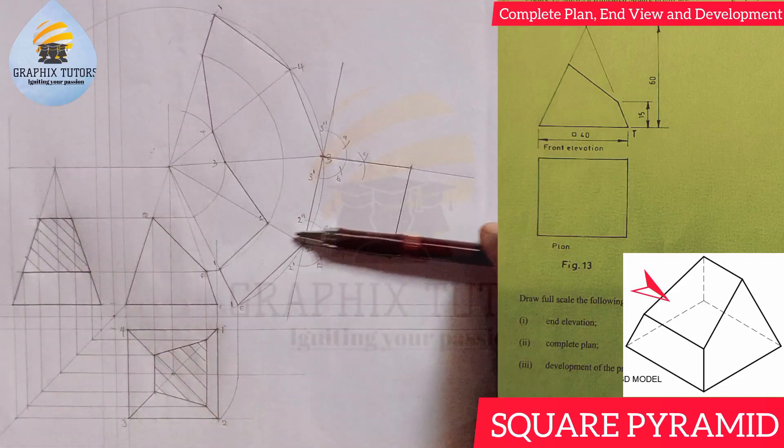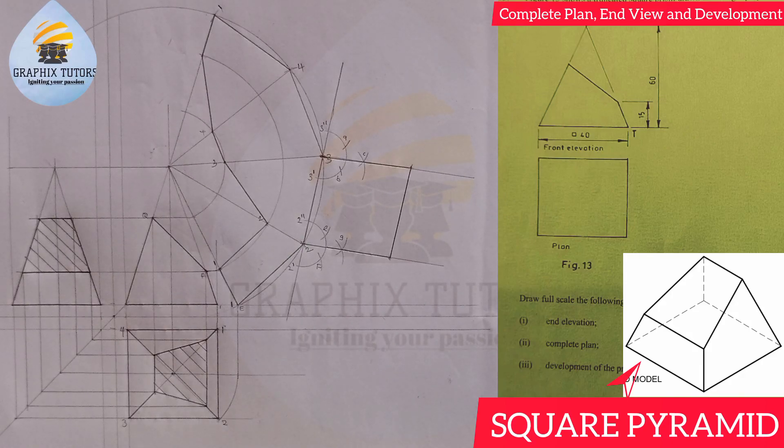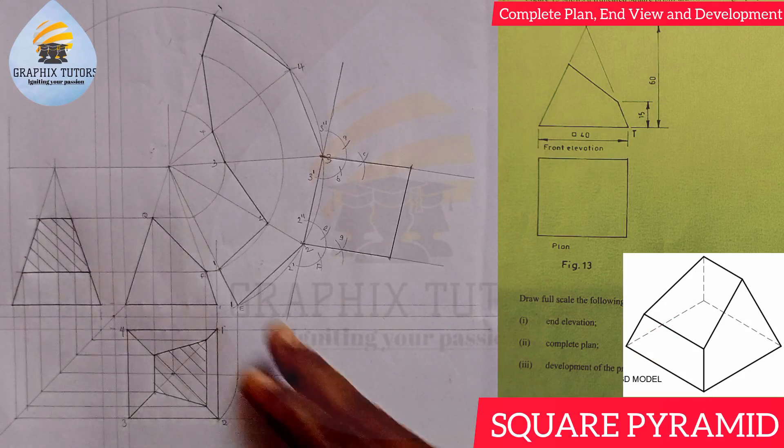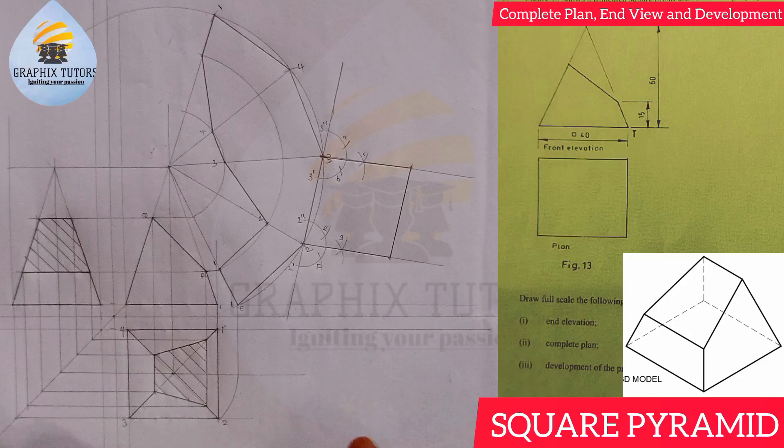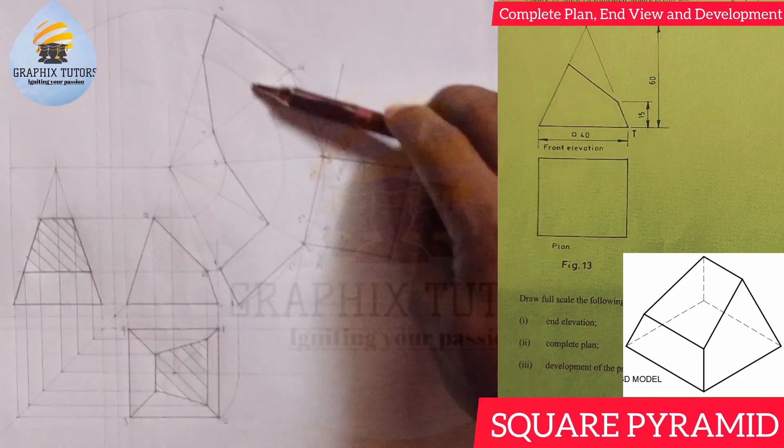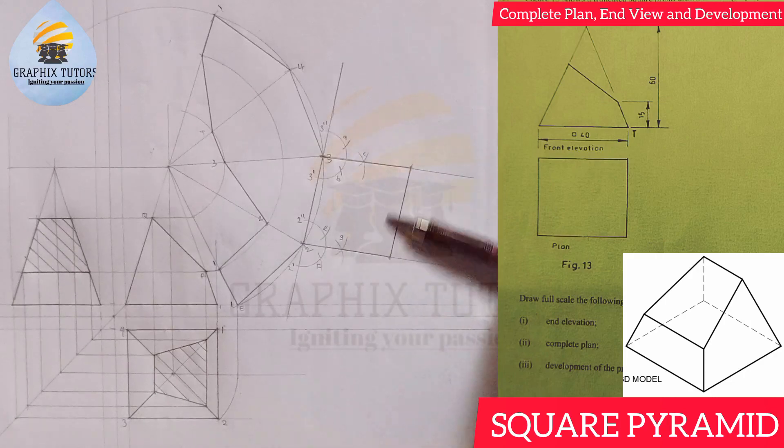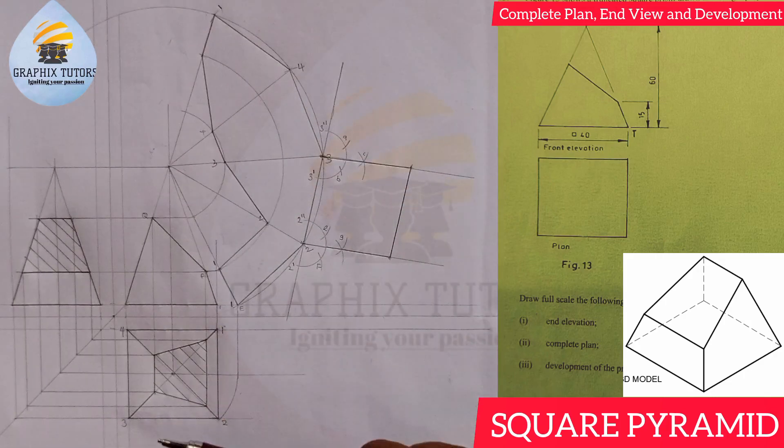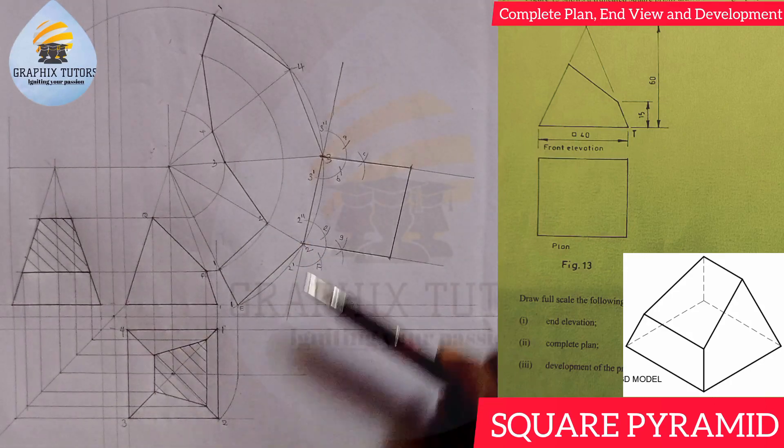Now similarly, we want to see the development of this shape. When you cut it and spread it along the surface, you're going to be seeing this. This will be the base, and this will be the other part that has been cut off from this pyramid. So this is the development of this truncated square pyramid.